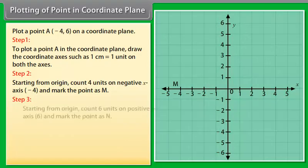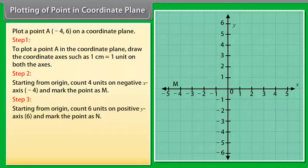Step 3: Now starting from origin, count 6 units on positive y-axis, that is 6, and mark the point as N.